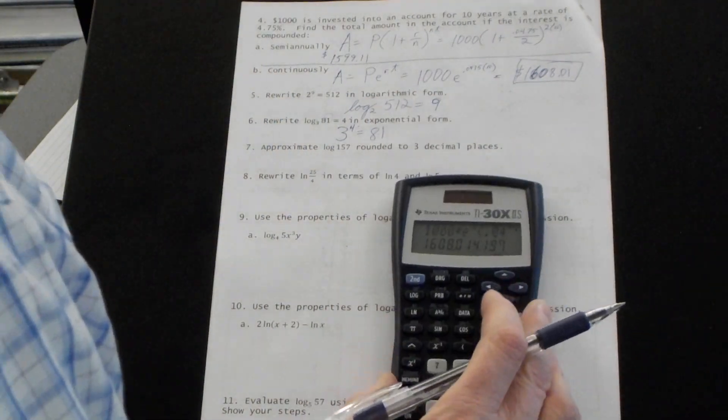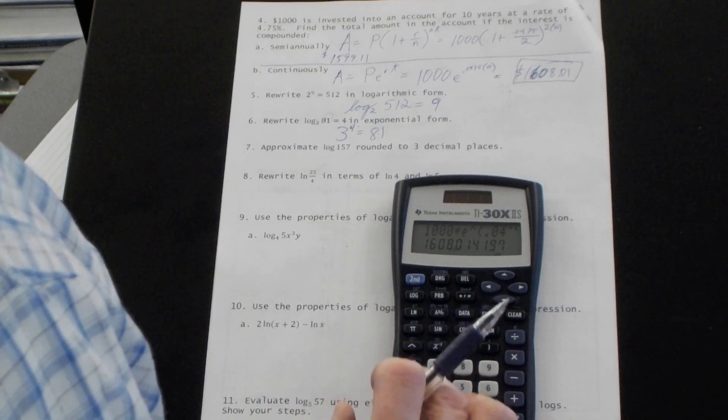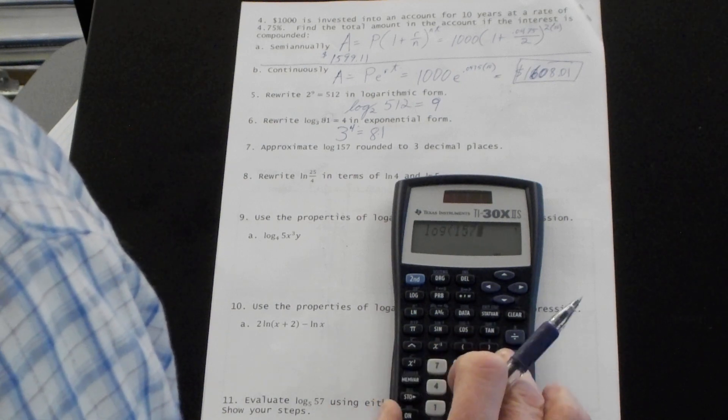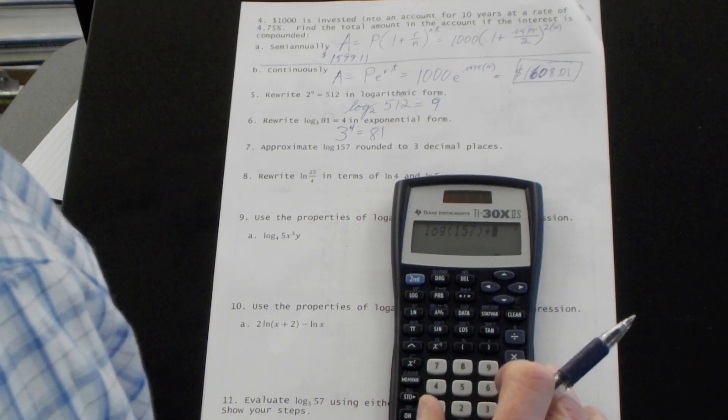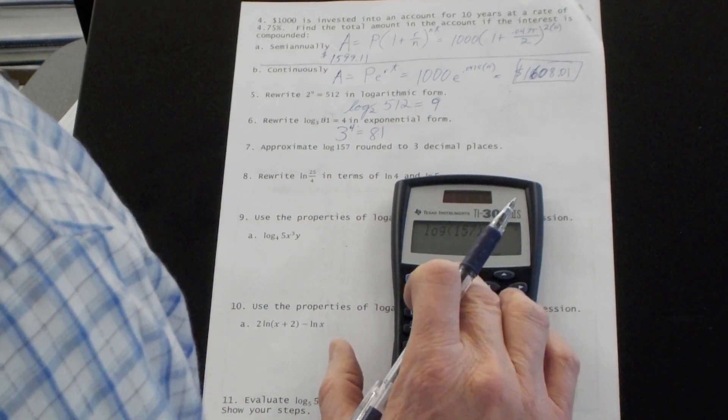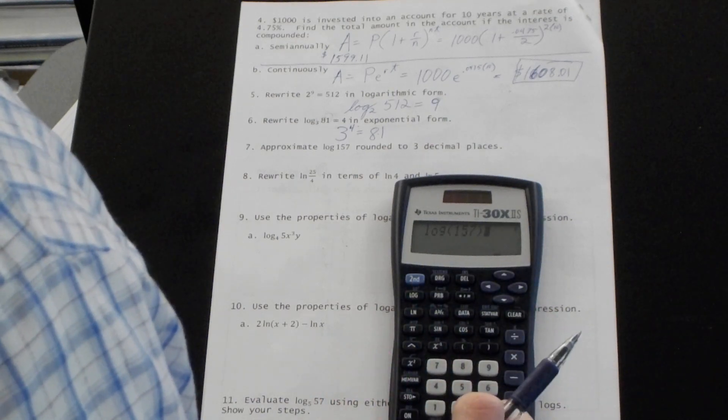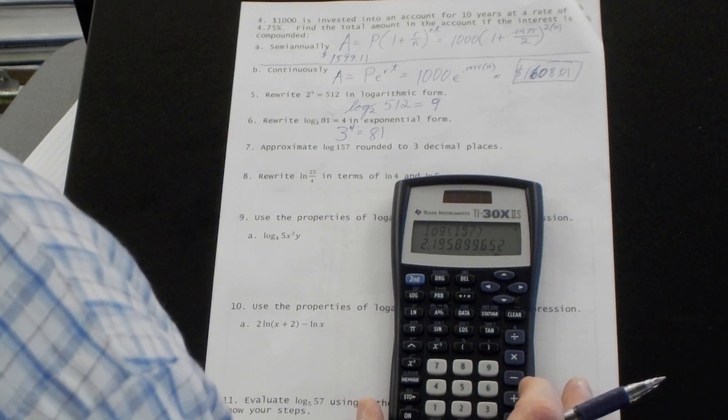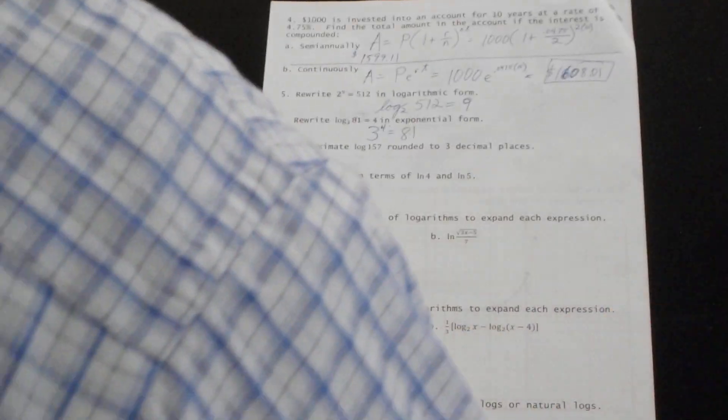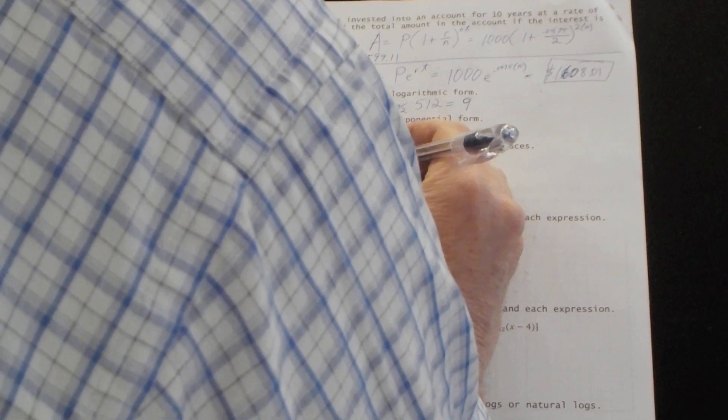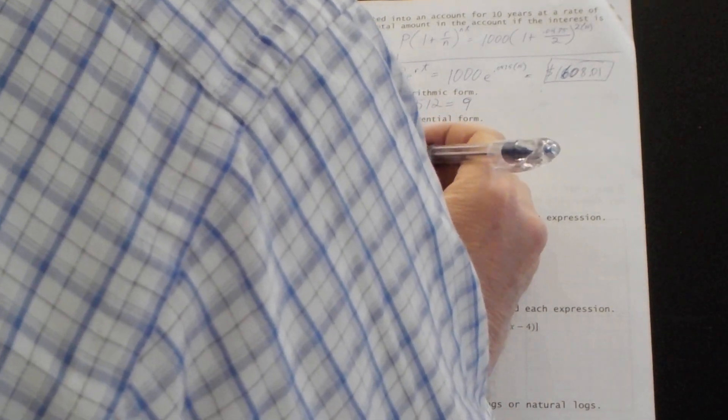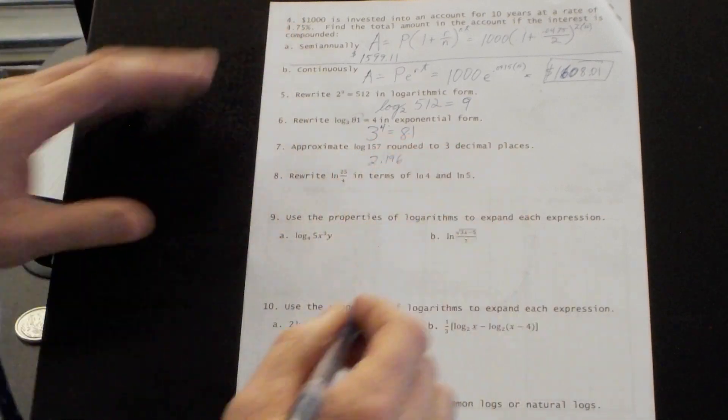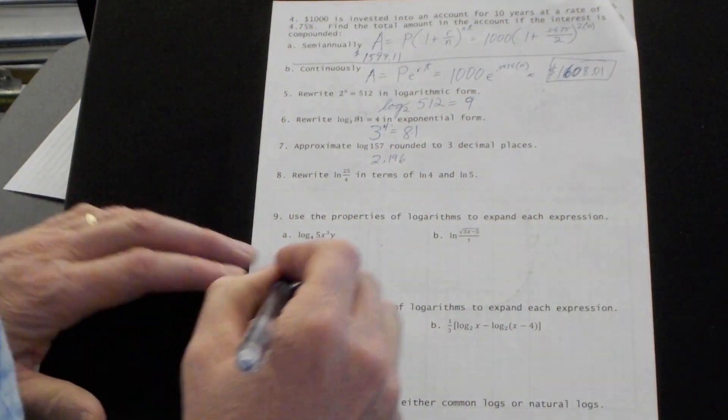Number seven. Log of 157. Log is right there. 157 is around three decimal places, 2.196. So 10 to the power of 2.196 is going to be real close to 157.